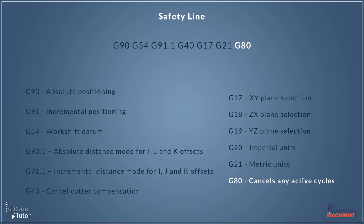Another very important one found in most safety lines is G80. G80 cancels any active cycles. Say, for example, we had a roughing cycle active and we stopped the machine halfway through, then started a drilling cycle — we need to cancel that active cycle. If we didn't read through to where that cycle is cancelled by the G80, we may have problems with our program and it may lose itself. So it's good practice to cancel any active cycles at the start of each section of code to make sure nothing is active inside the machine.